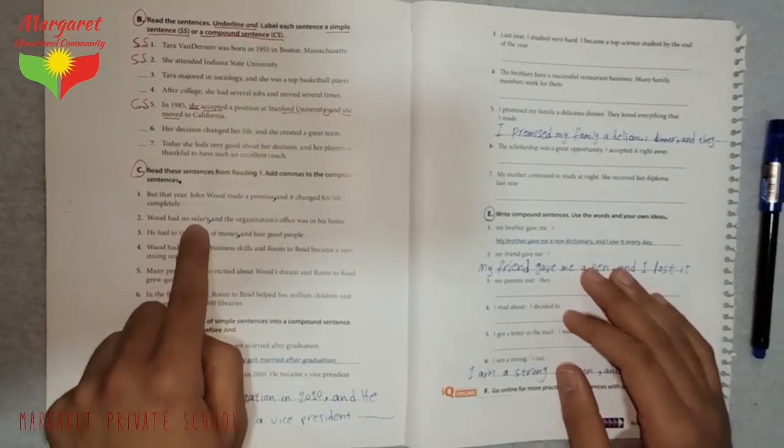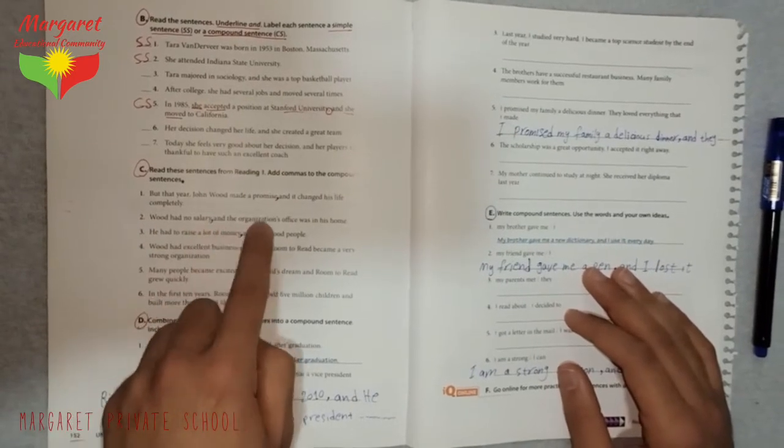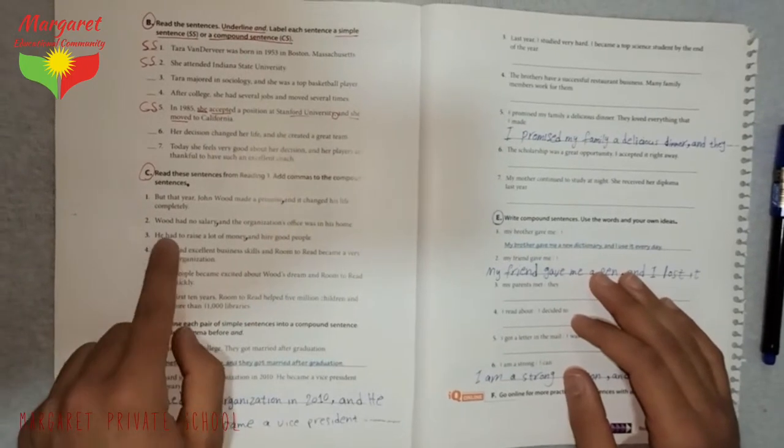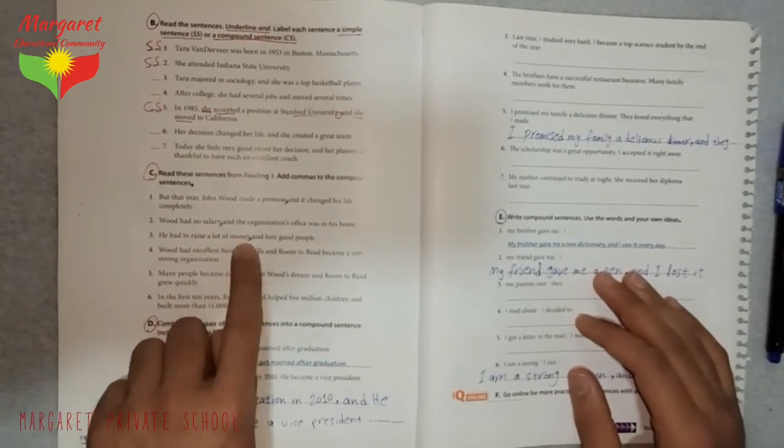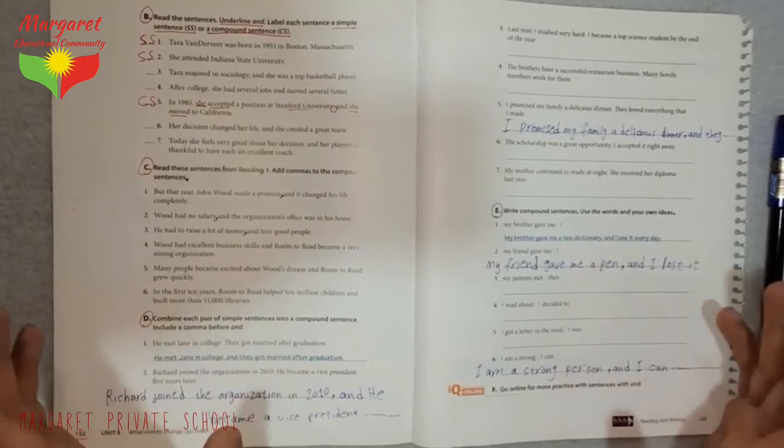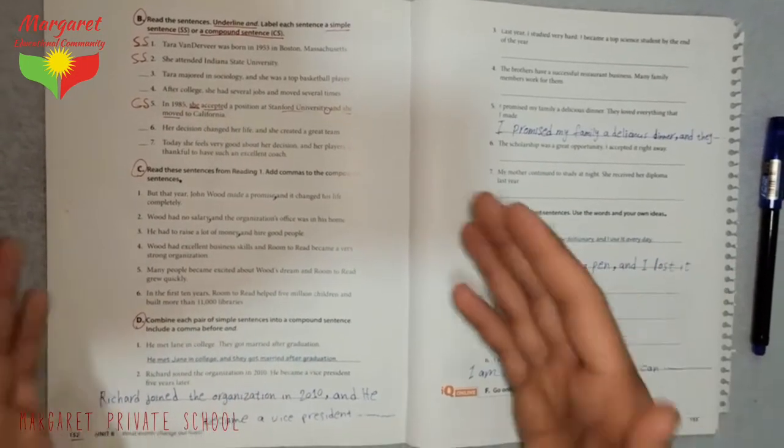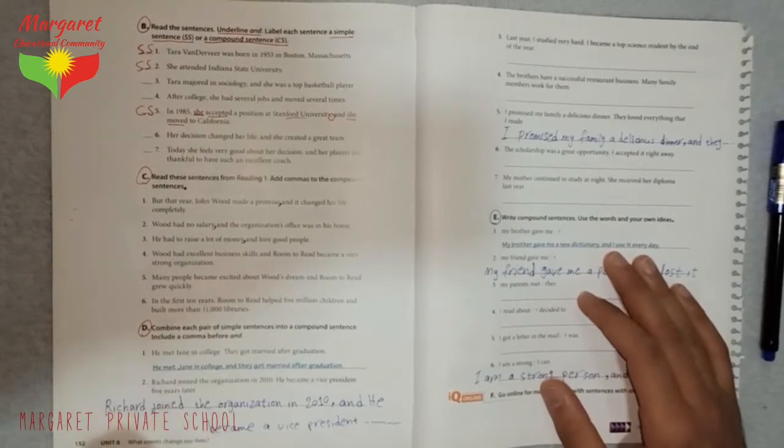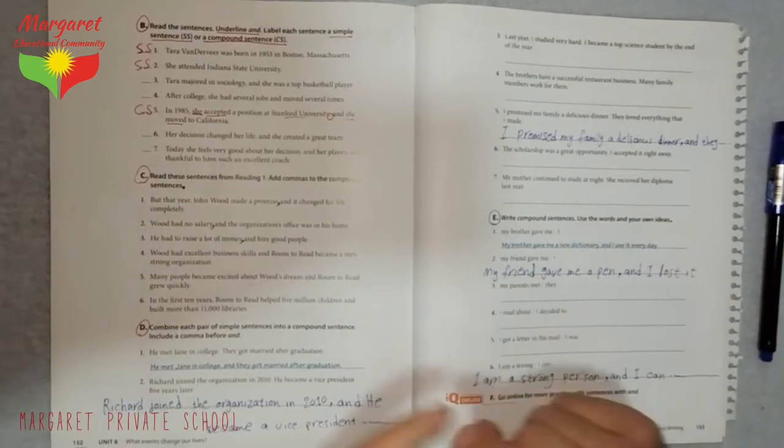Number two, Wood had no salary, comma, and the organization's office was in his home. Number three, he had to raise a lot of money, comma, and hire good people. Try to do the remaining sentences and add comma before 'and' to link the two sentences.